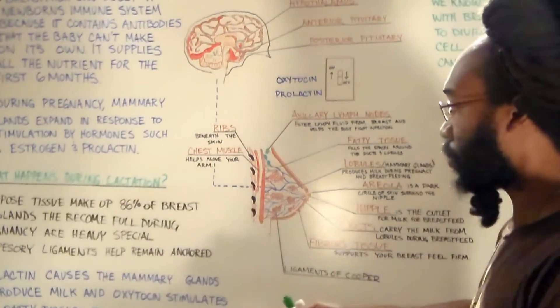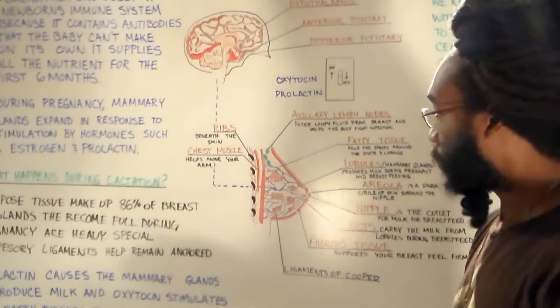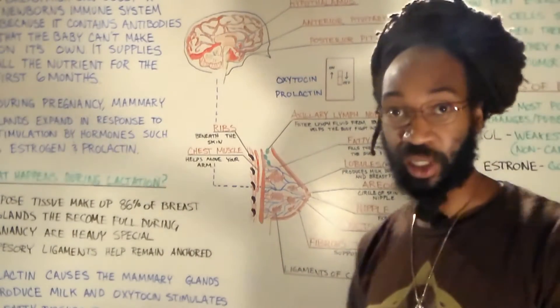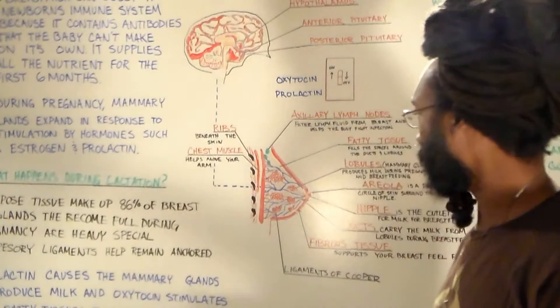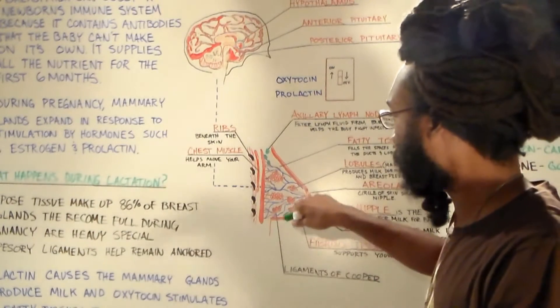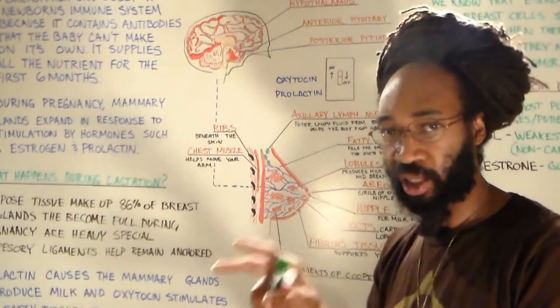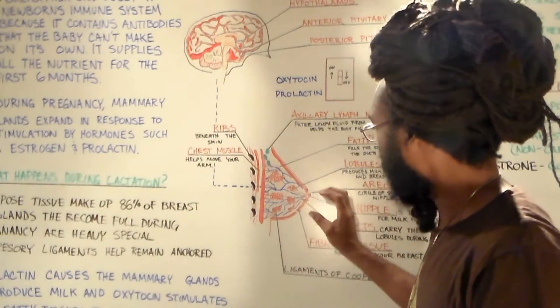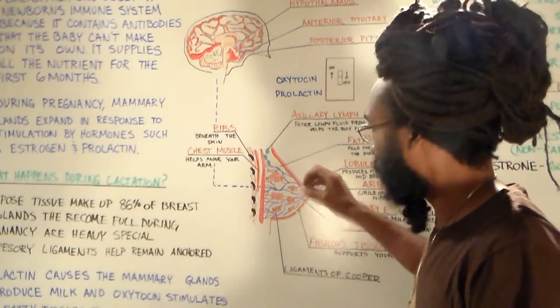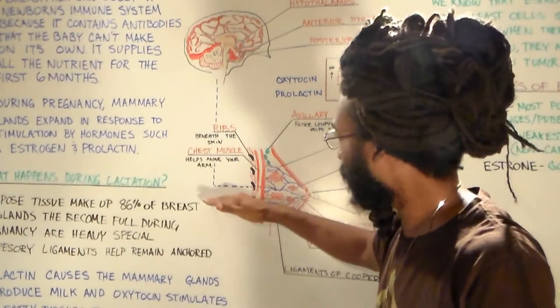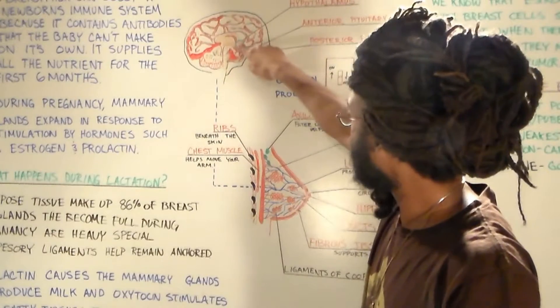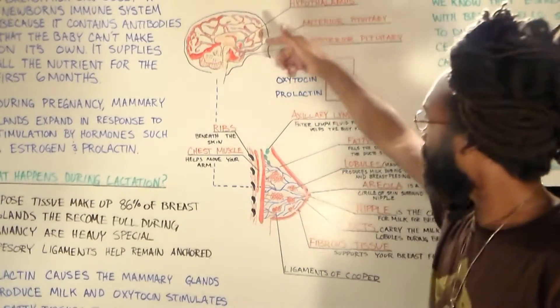So we know what happens during lactation, or do we? We have to get into that because this is where people thought that I was saying something wrong. They really thought I was saying something wrong. So we got sensory neurons when the baby's suckling on the nipple. So the baby's creating the stimulation and all of the sensory neurons are going to the spinal cord, going up the brain into the hypothalamus.